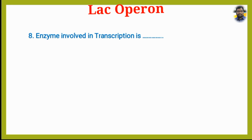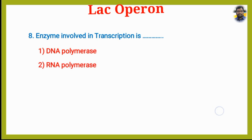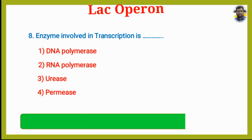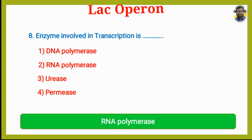The enzyme involved in transcription is which? Option 1: DNA Polymerase. Option 2: RNA Polymerase. Option 3: Urease. Option 4: Permease. The answer is Option 2, RNA Polymerase.